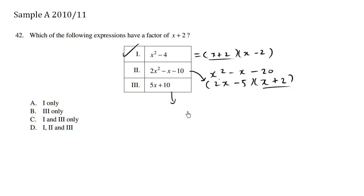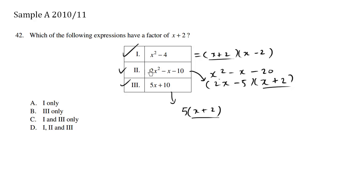For this last one, I'm going to factor out the 5, so we get x plus 2. Because 5 times x is 5x, and 5 times positive 2 is 10. So again, we have the factor of x plus 2. All three of these choices have a factor of x plus 2, so choice D is correct.